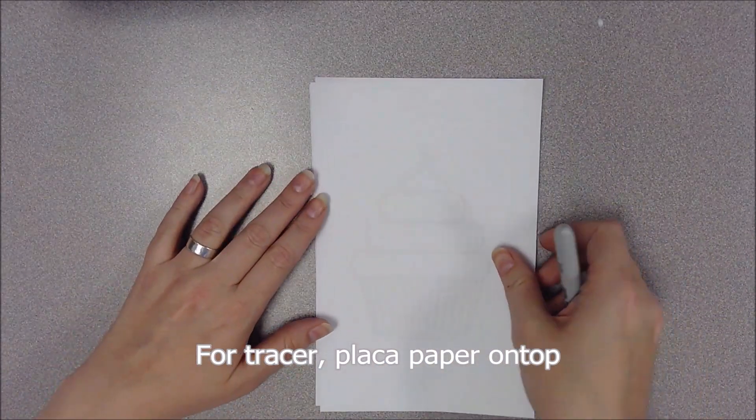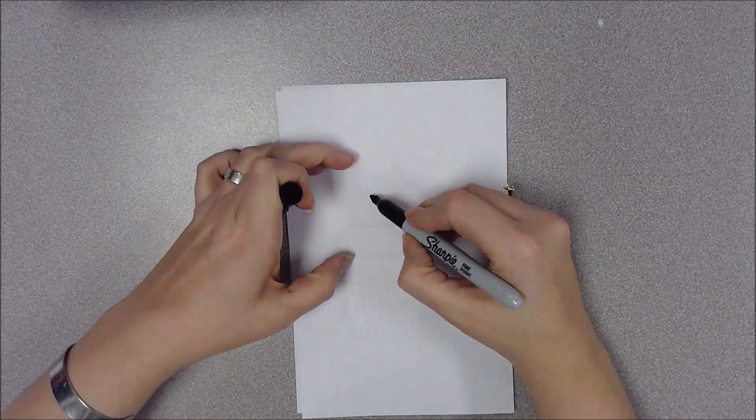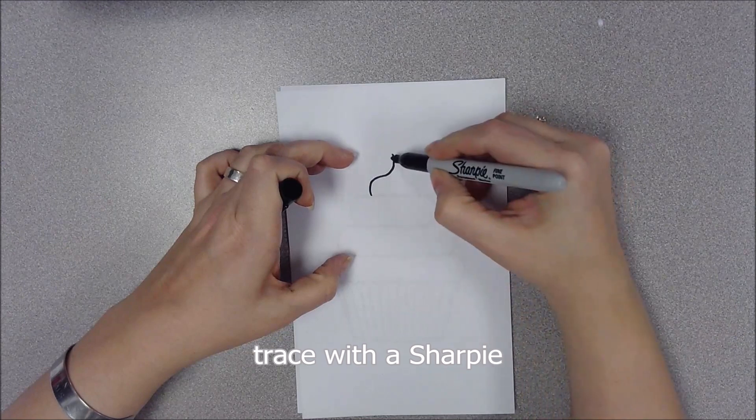So I'm going to put my paper on top. We can see the lines through it. We're going to trace our little cupcake.